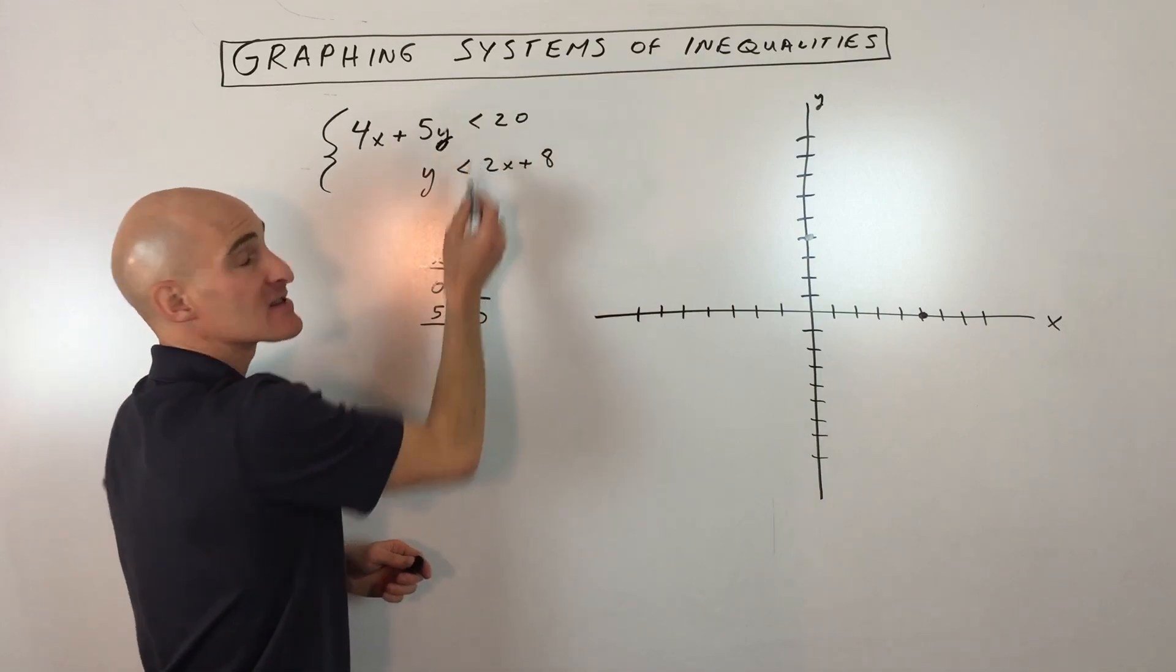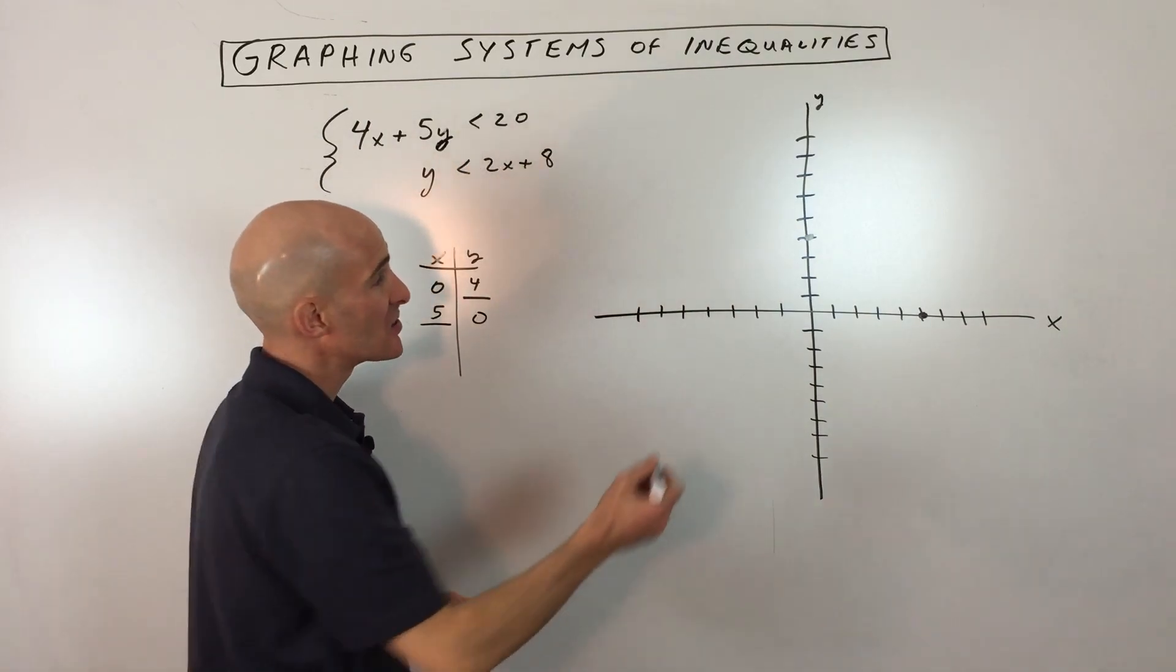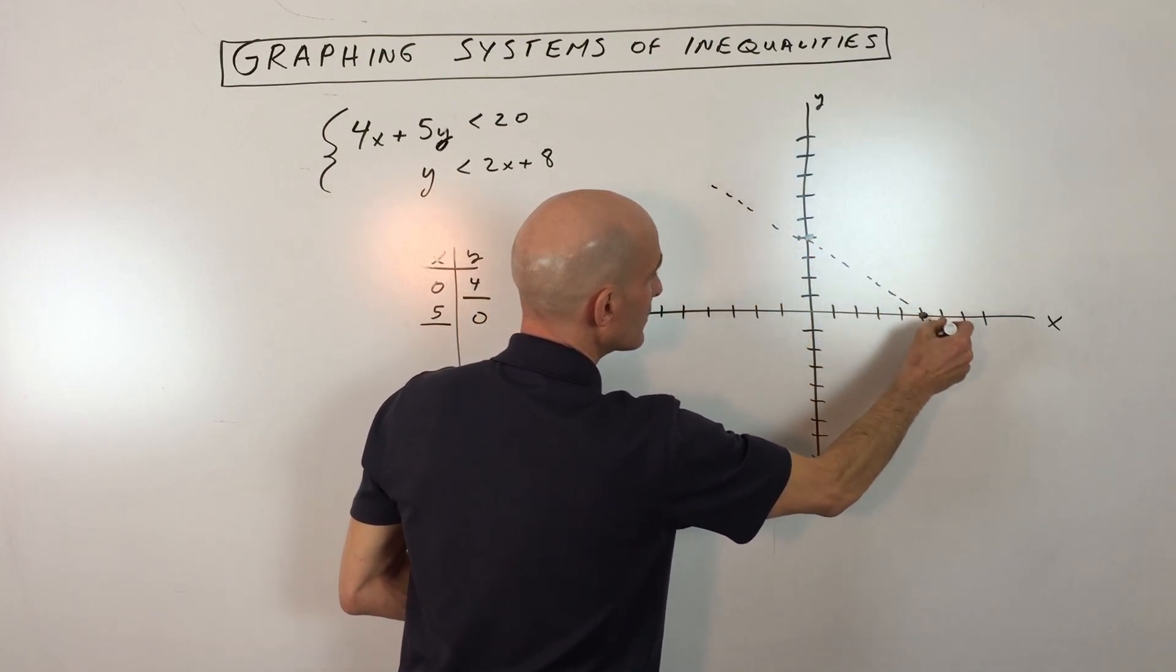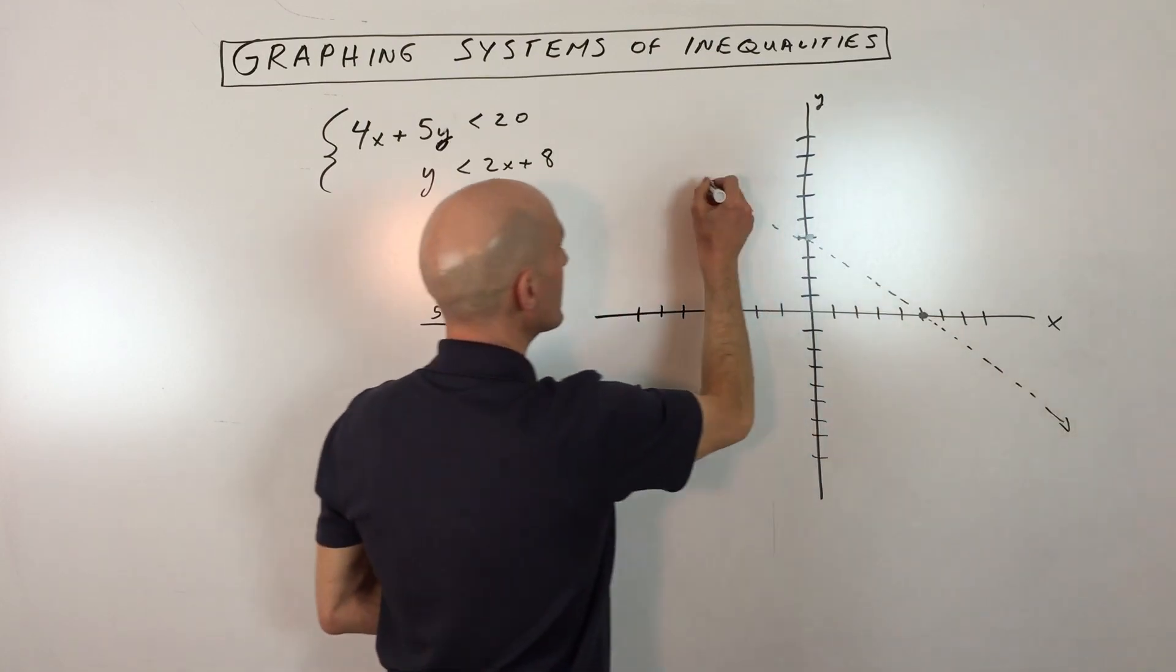Now you can see that this is less than but not equal to. So that means this is going to be a dashed or a dotted line. So I'm going to draw that in there like so and it keeps going.